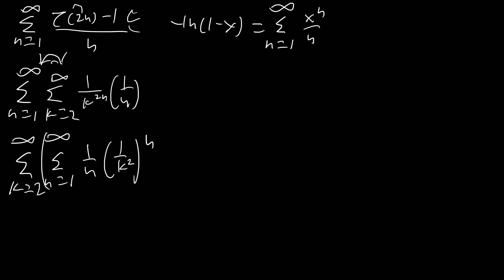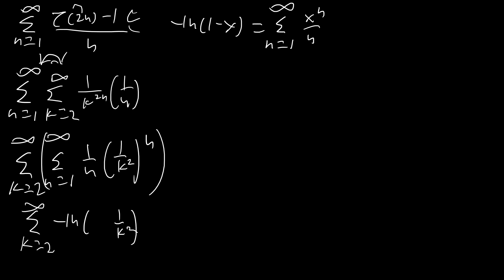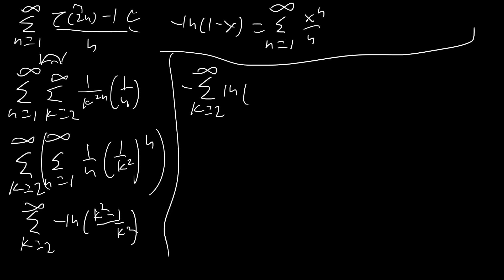Applying that to the inner sum, we get the sum from k equals 2 to infinity of negative ln(1 minus 1 over k squared). Let's reorganize the inside — putting everything over k squared gives us k squared minus 1 over k squared. Then we split this up: the numerator k squared minus 1 factors as (k+1)(k-1), so we get ln(k+1) plus ln(k-1) minus 2 ln(k), since minus ln(k squared) is just 2 ln(k).